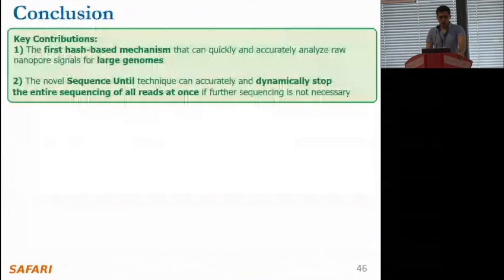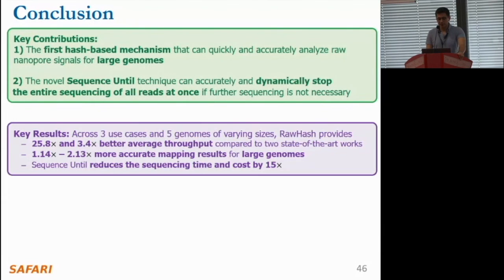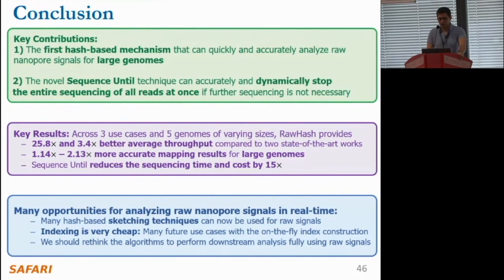To conclude, we provide the first hash-based mechanism for quick and accurate analysis of raw nanopore signals for large genomes. We also propose Sequence-Until, which can accurately and dynamically stop the entire sequencing run if further sequencing is unnecessary. RawHash provides significant improvements in overall throughput and accuracy for large genomes, and Sequence-Until can reduce sequencing time and cost by 15 times.